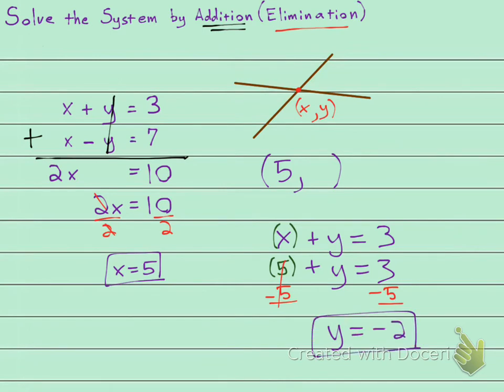So these two equations are going to cross at the point 5 negative 2. This is called the solution to the system of linear equations. And that's the only combo, x-y combo, that is going to give you a true statement for the top equation and the bottom equation.